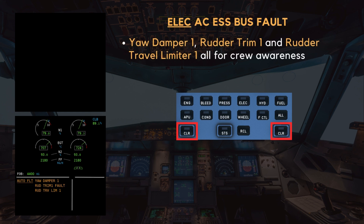Autoflight: Yaw Damper 1, Rudder Trim 1, and Rudder Travel Limiter 1 Fault. These are all for crew awareness, so clear Autoflight.